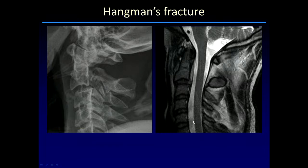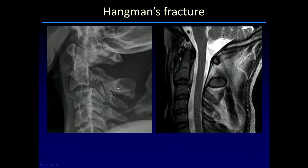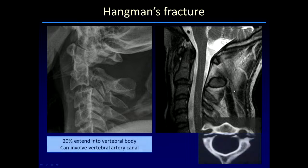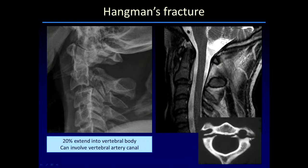Here's another example showing the typical anterolisthesis of C2, and also showing the retropulsion of the posterior arch. If we draw our spinal laminar line between C1 and C3, you can see the spinal laminar line of C2 lies posterior to that, with no encroachment on the spinal canal. However, it can have significant impact if there is associated vascular damage. About 20% of these fractures extend into the vertebral body, and a smaller percentage will traverse the vertebral artery canal, potentially resulting in dissection or rarely transection of the vertebral vessels.